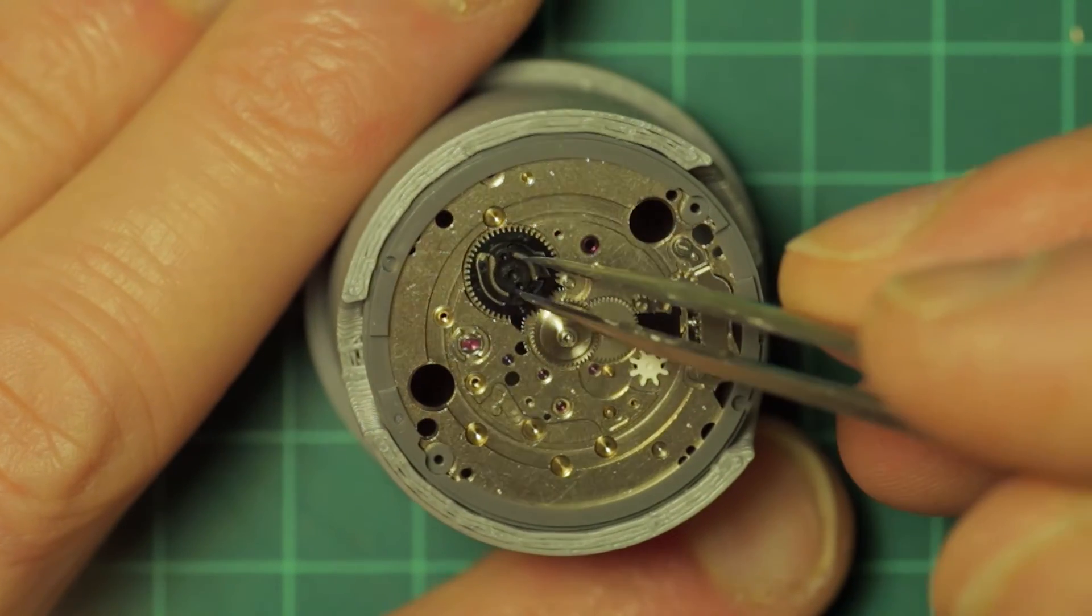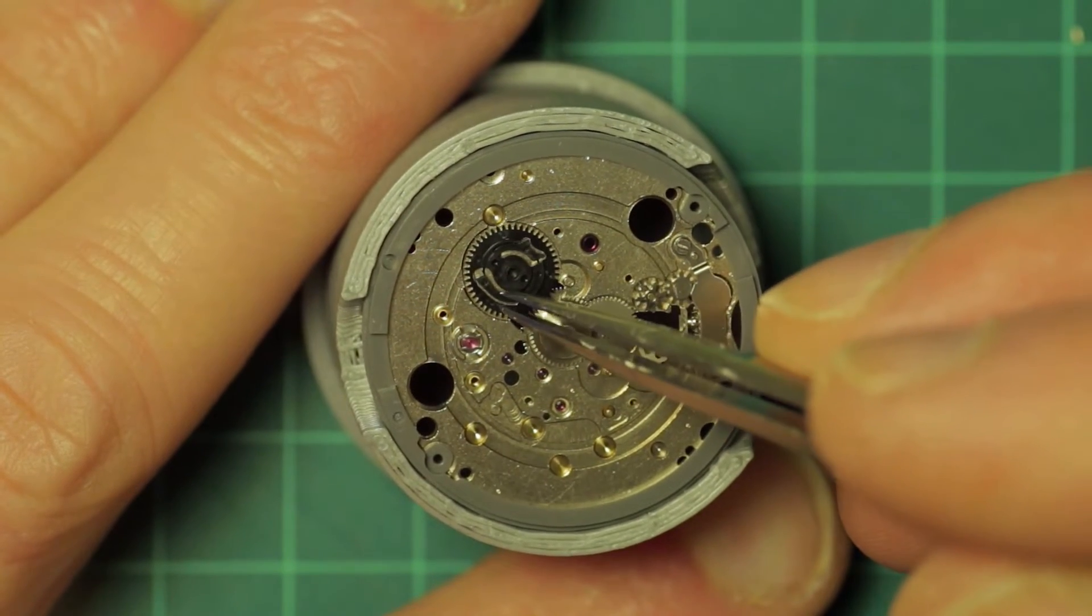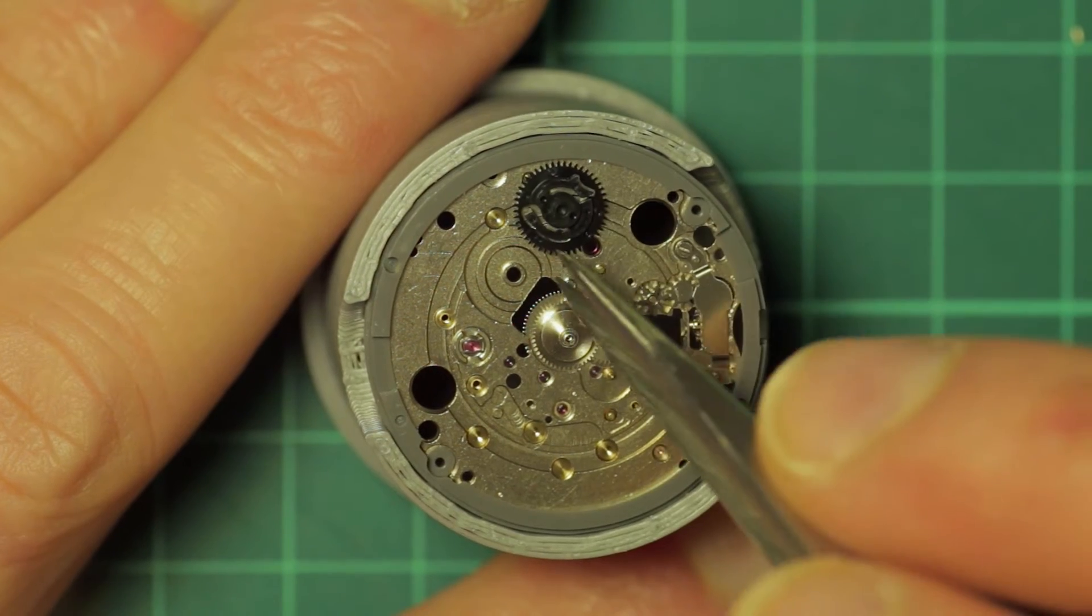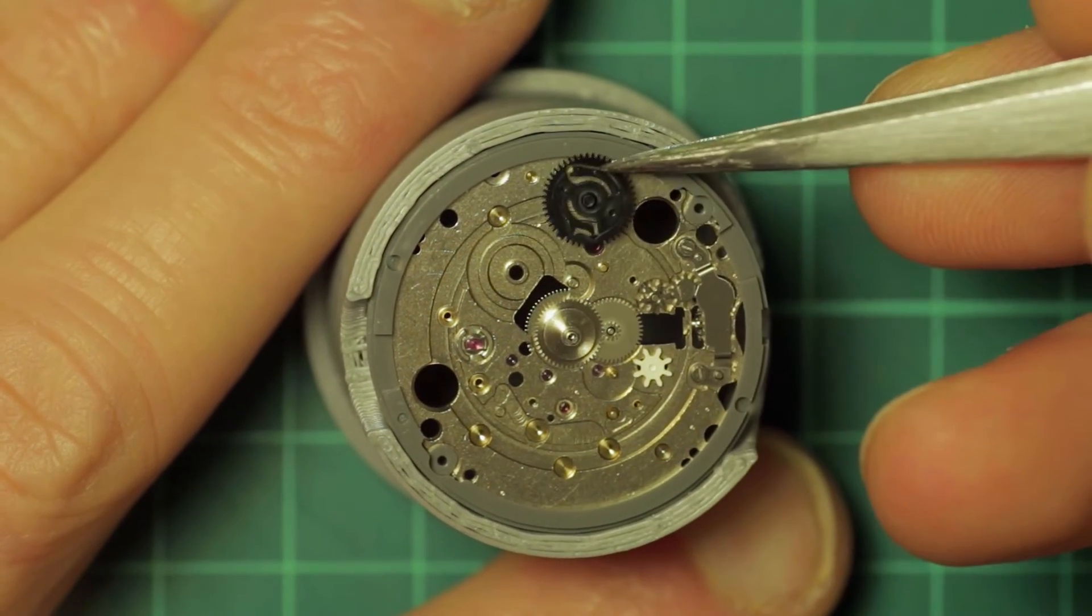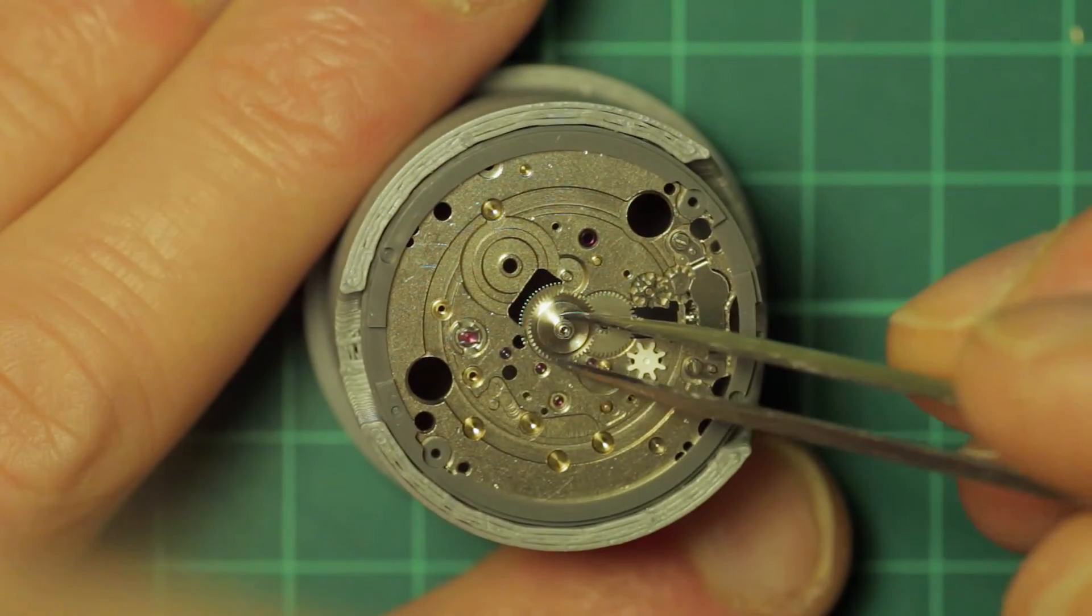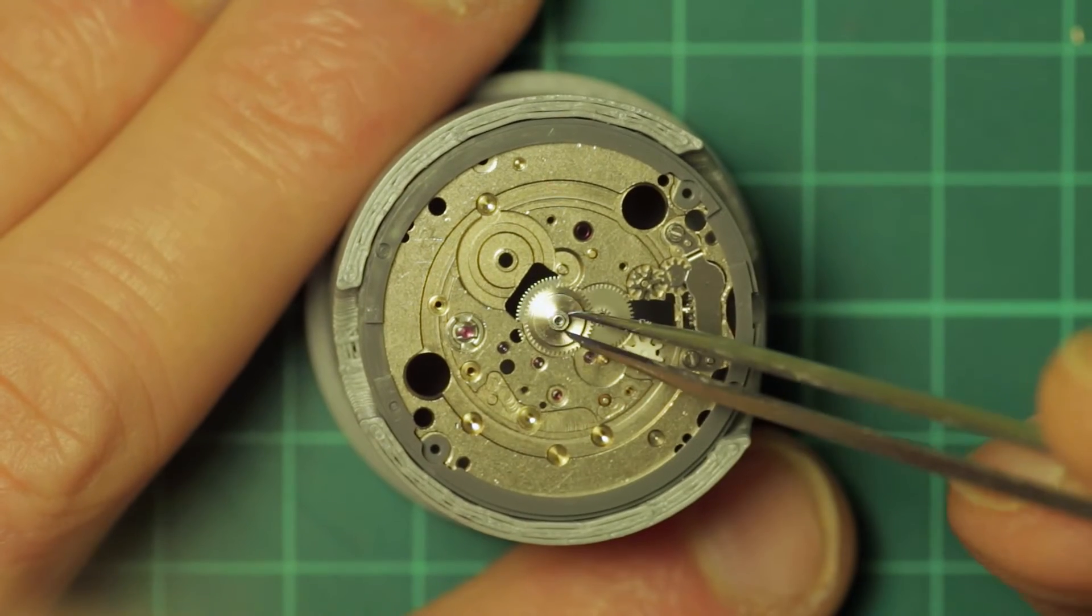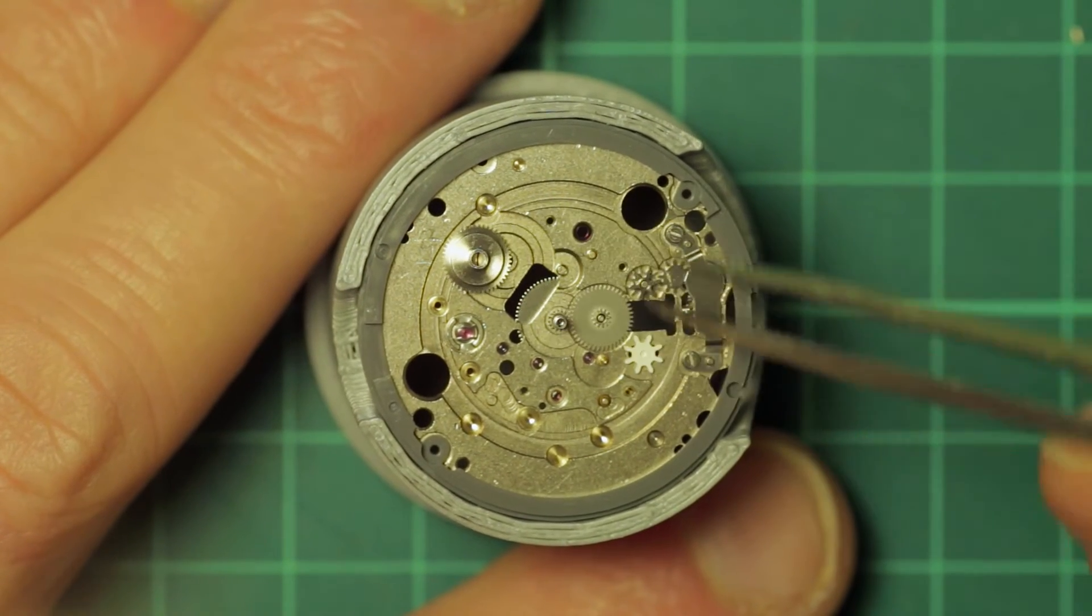And then the date change wheel which is plastic. Very common for Seiko from the 7-0 series onwards. Possibly in fact even before that. A lot of the movements used plastic date wheels.